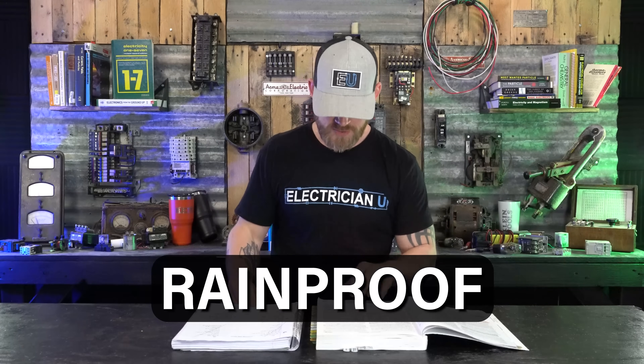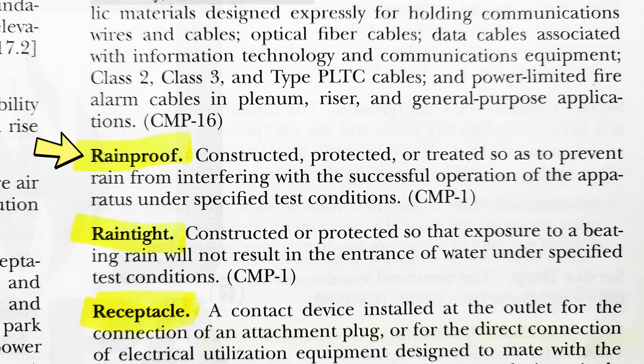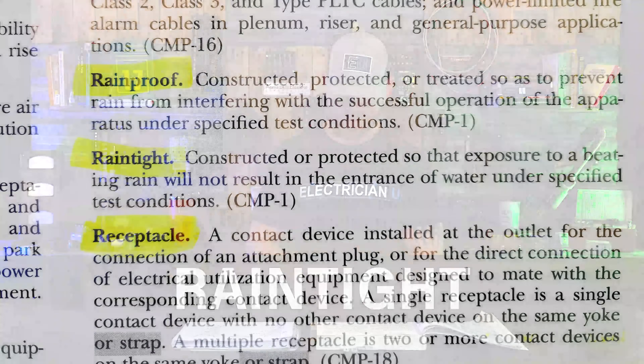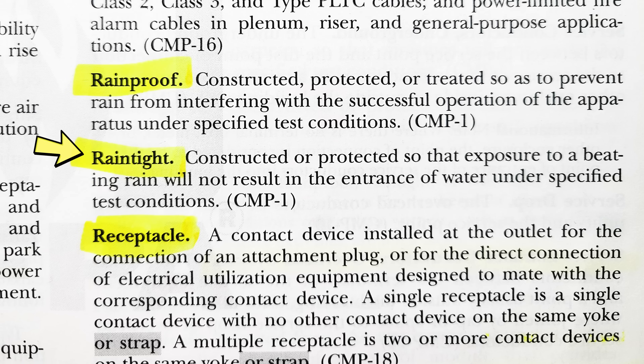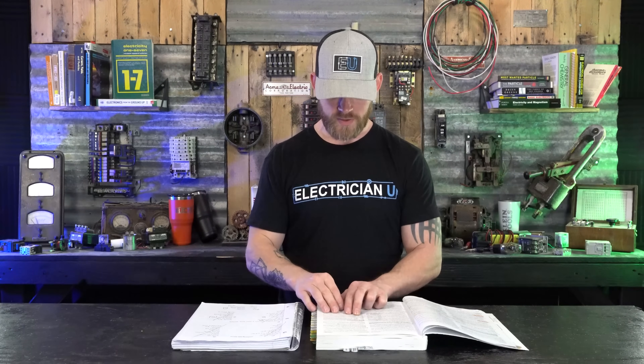Next we have rainproof. A rainproof thing is something that is constructed, protected, or treated so as to prevent rain from interfering with the successful operation of the apparatus under specified test conditions — so it's preventing rain from interfering with its operation, not preventing it from entering. Then we have raintight, which is constructed or protected so that exposure to beating rain will not result in the entrance of water under specified test conditions. So raintight means fully enclosed so beating rain can't get in, whereas rainproof is just preventing rain from interfering with the operation of the device.